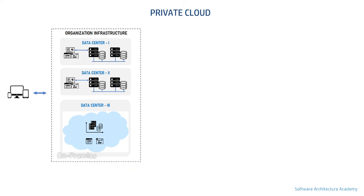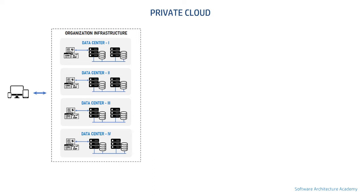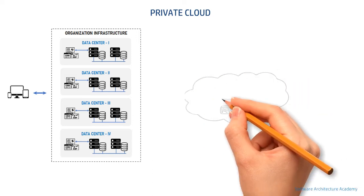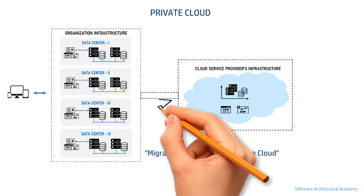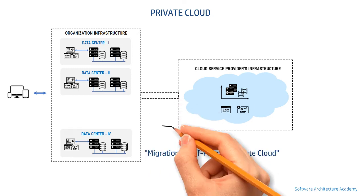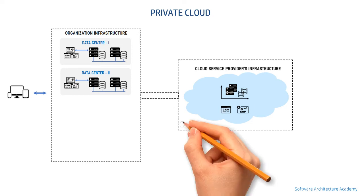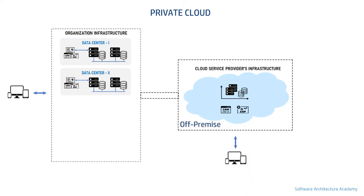This variant is popularly known as on-premise or on-prem. The next variant is where the infrastructure, exclusively operated for an organization, is hosted on the cloud service provider's physical boundaries — this is known as off-premise. Only one organization will have access to this, even though it is not on their data center. In terms of who operates both setups, it can be the organization or the cloud service provider, creating two further variants.